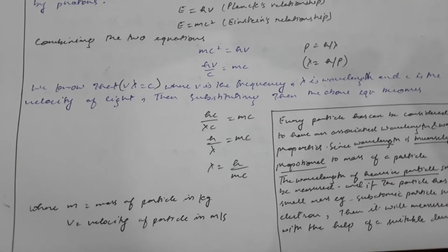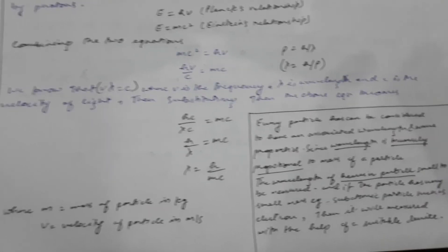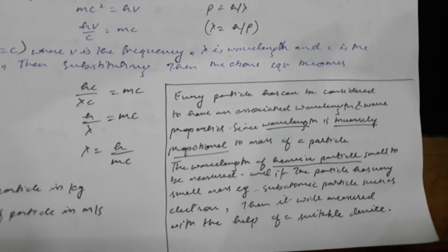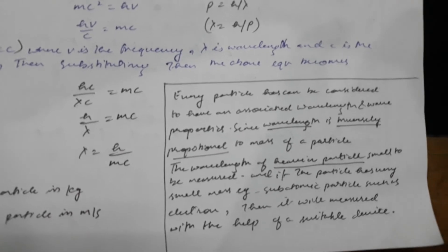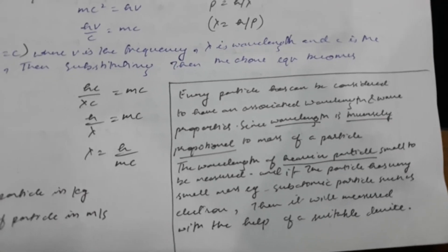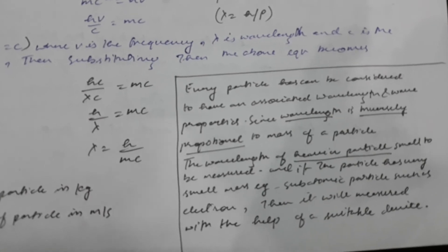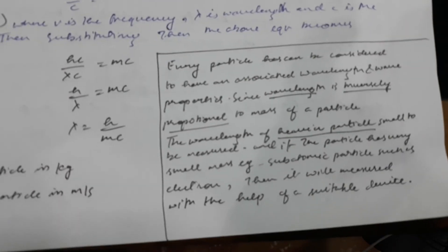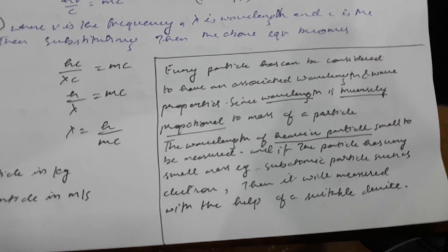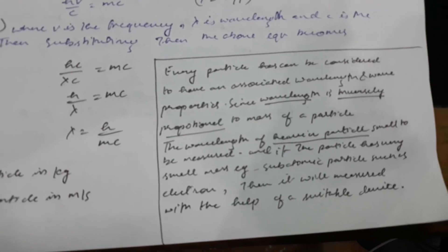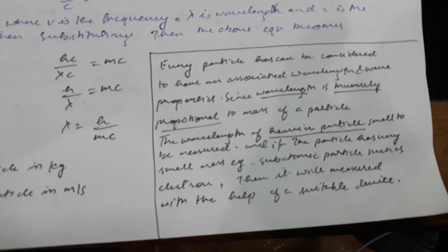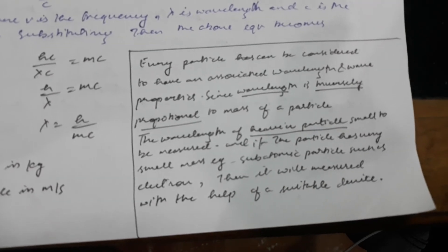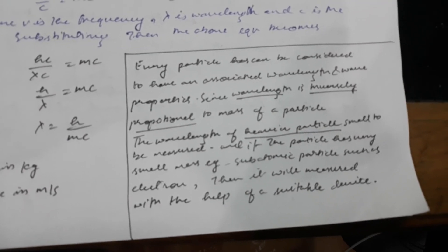We can conclude that every particle can be considered to have an associated wavelength and wave properties. Since wavelength is inversely proportional to mass, the wavelength of heavier particles is small.